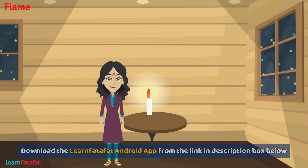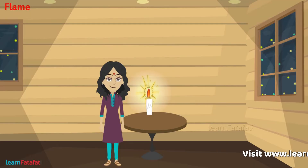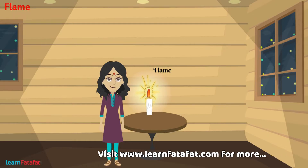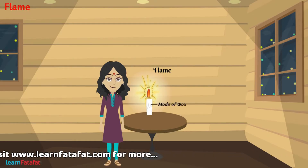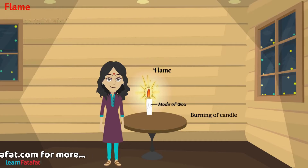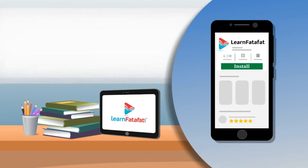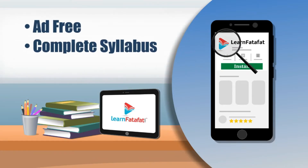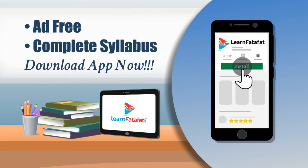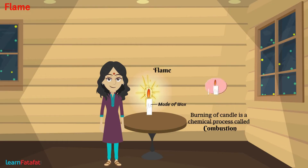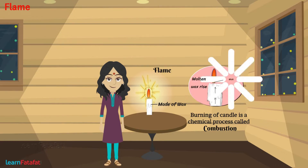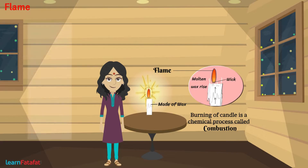Dear students, the part of a burning candle that is giving off the light is called flame. We know that candle is made of wax. Burning of candle is a chemical process called combustion. During combustion, molten wax rises through the wick, gets vaporized and forms a flame.